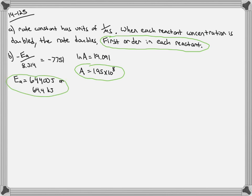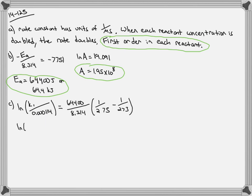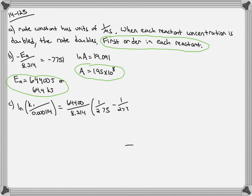For part C, they want us to calculate the rate when we have a concentration of methane at 1.8 ppm and a concentration of ozone at 5.0 ppm. To calculate the rate, we use the differential rate law: rate equals k multiplied by the molar concentrations. We are not given molarity concentrations, so we need to calculate molarity from ppm. We were also not given the rate constant at 273 Kelvin, so we need to calculate it using the Arrhenius equation: natural log of the rate constant at one temperature divided by the rate constant at another temperature. This rate constant value at 275 K comes from the table.